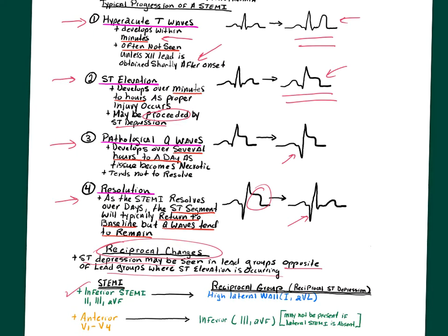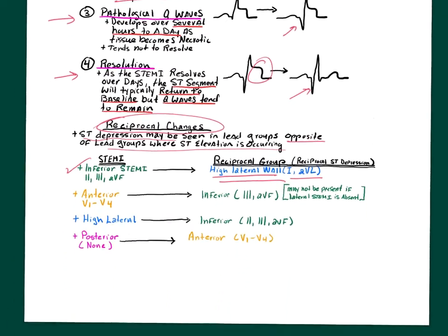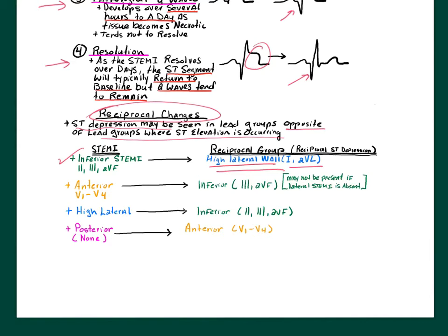If you have a STEMI of the inferior wall — leads 2, 3, AVF — the reciprocal group tends to be in the high lateral wall, and you see these changes most pronounced in leads 1 and AVL. The high lateral wall is reciprocal to the inferior wall, so that's the likely place to see reciprocal ST depression and T wave inversion.